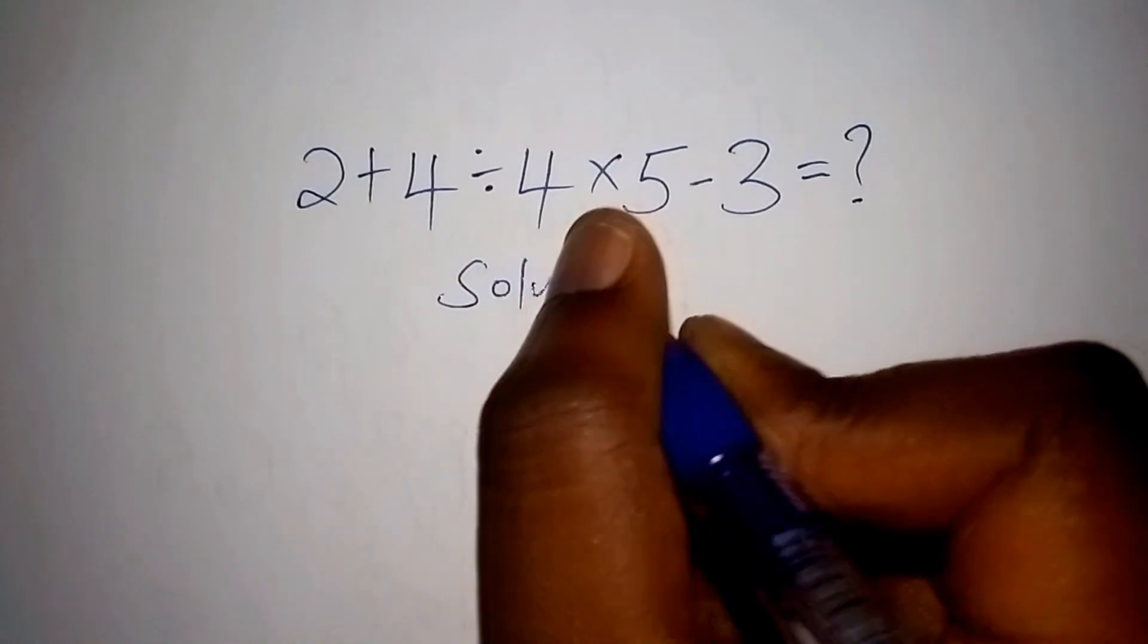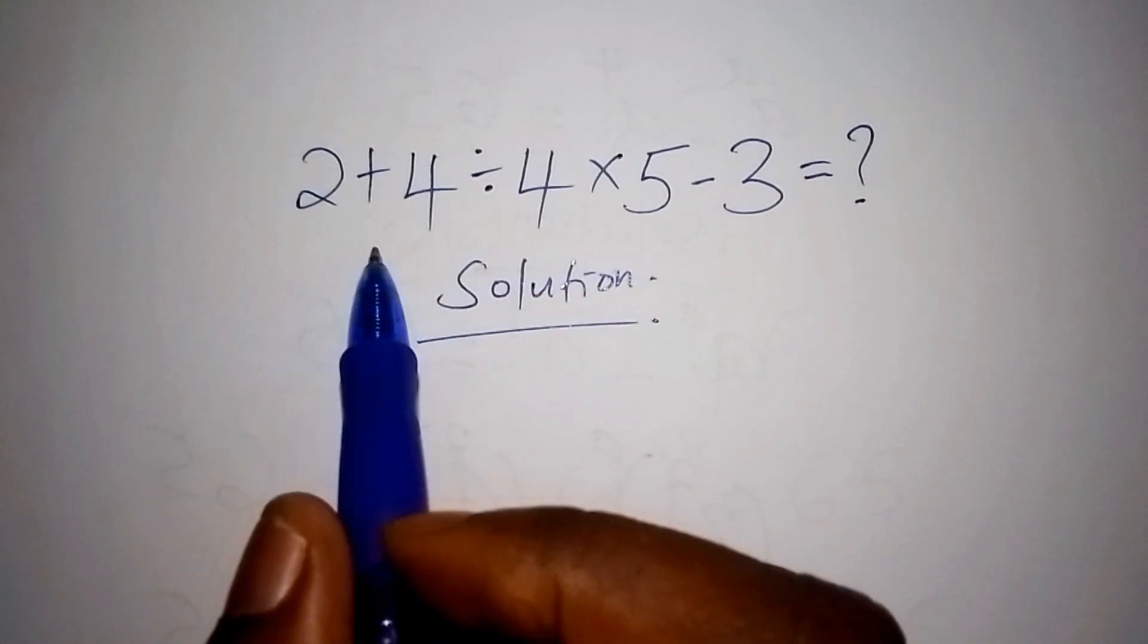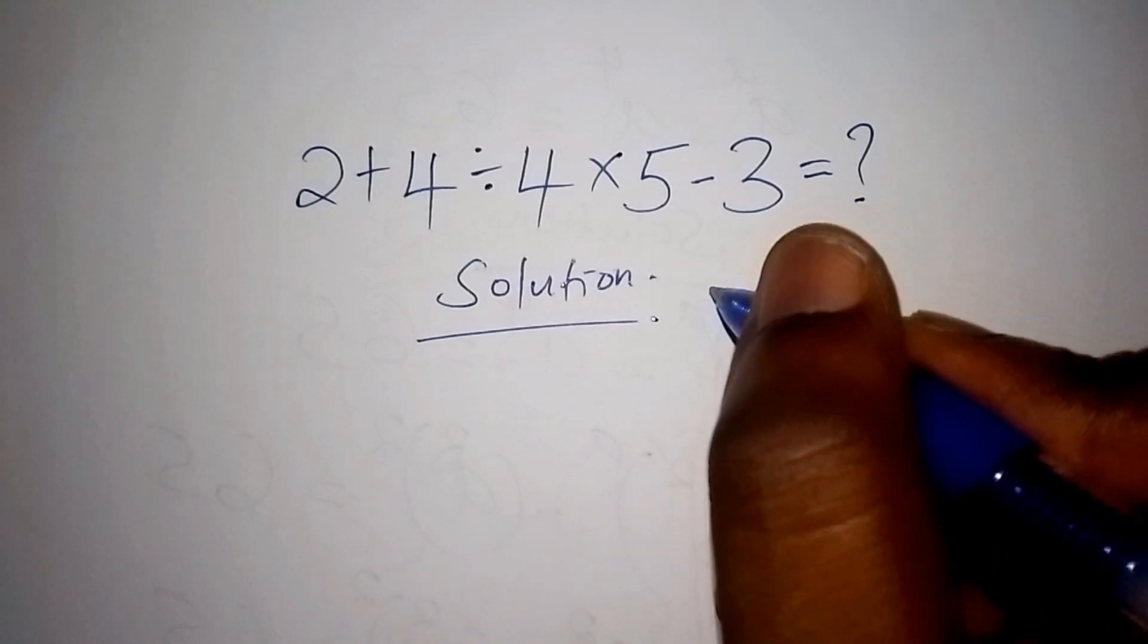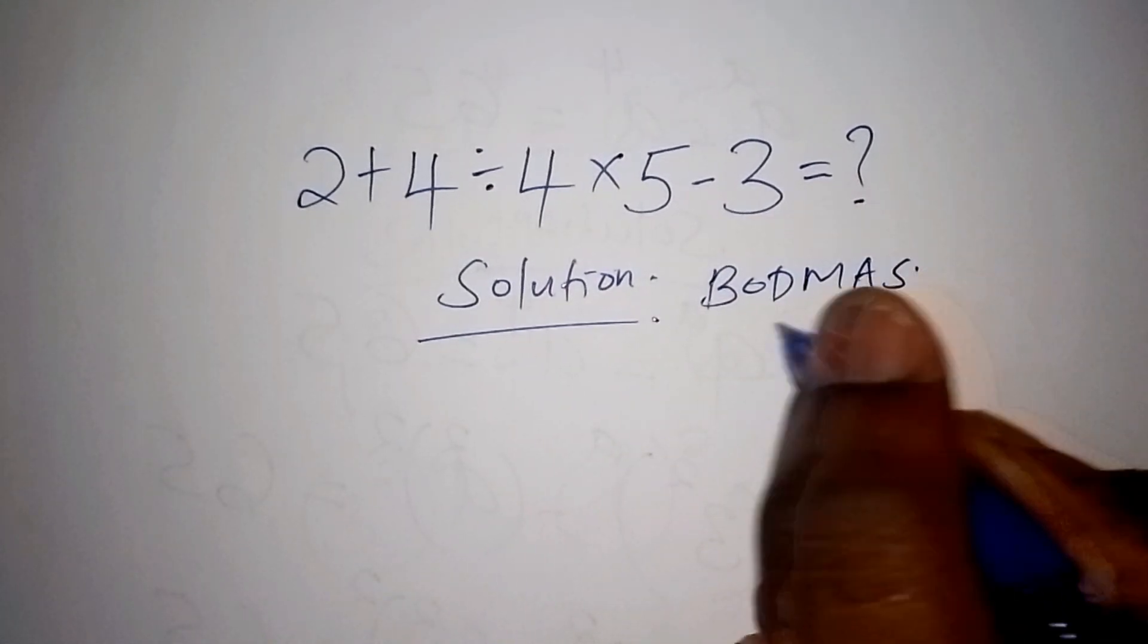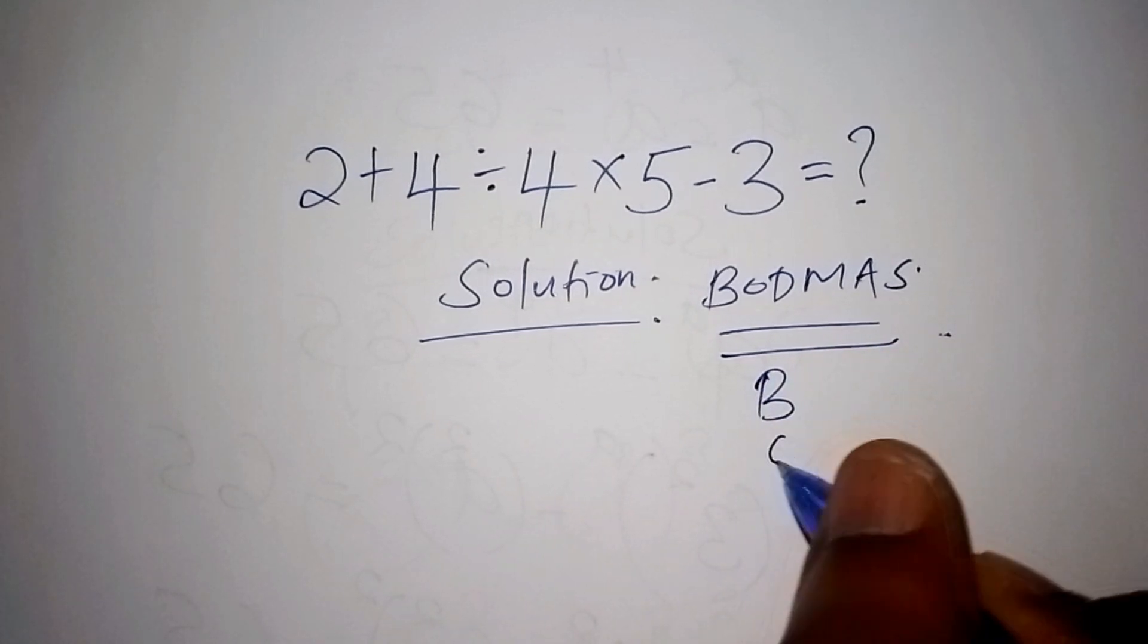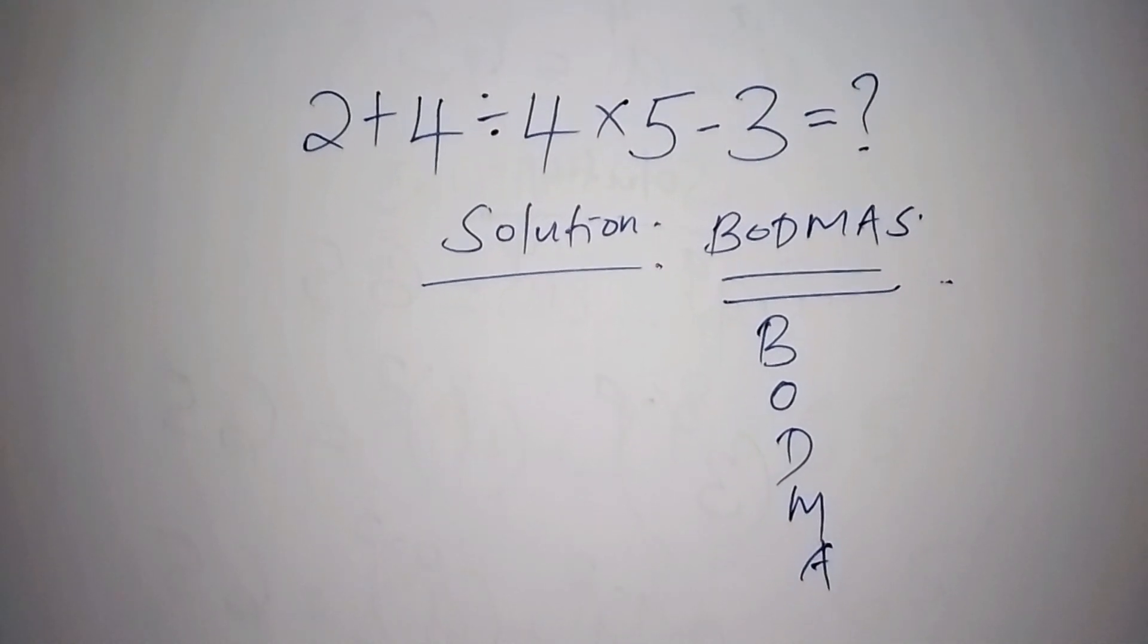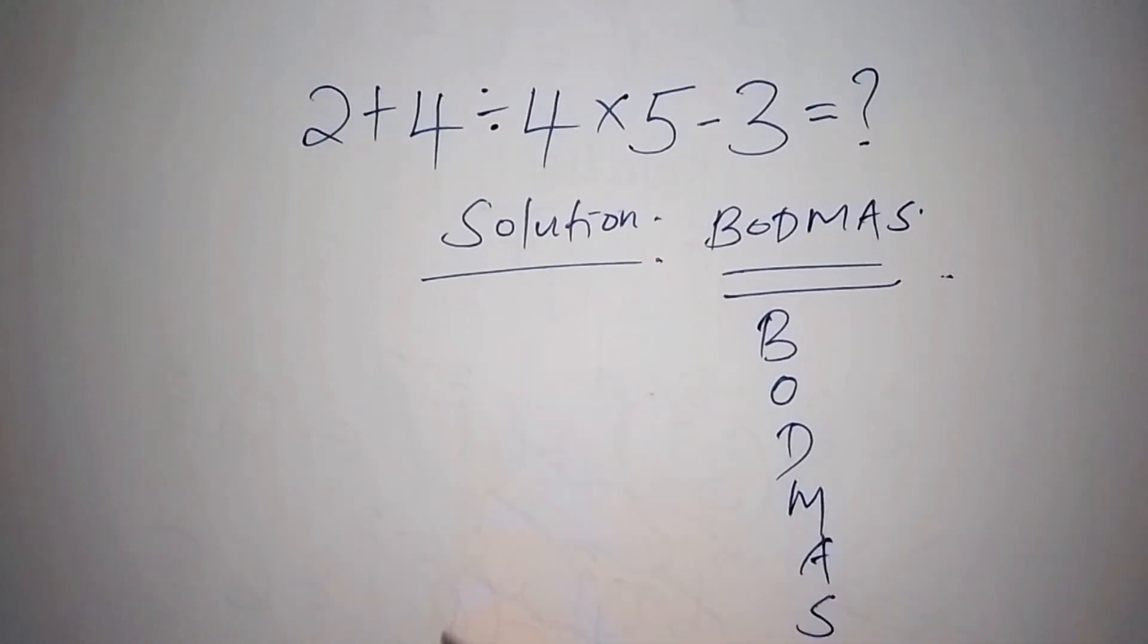So let's start with the solution. On our solution, we will not choose to work it this way by having 2 plus 4, but what we shall now consider is our BODMAS. So we need to understand what this BODMAS stands for.